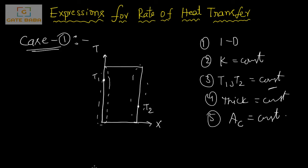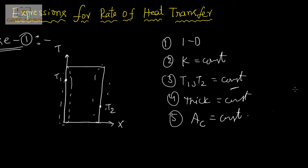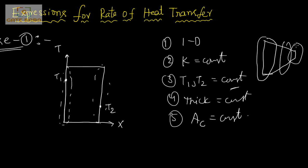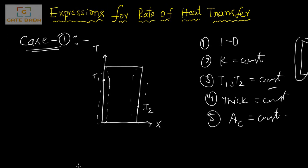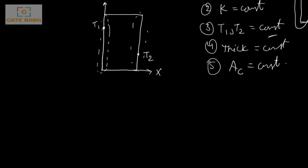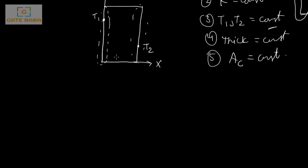In the case of variable cross-sectional area, the slab is shaped such that the area is very high on one side and progressively less toward the other. That is not our case here — our case is a constant cross-sectional area. With these assumptions, I am proceeding to the expression.